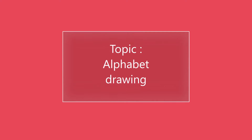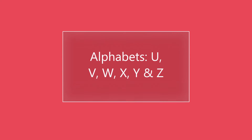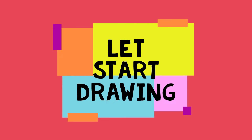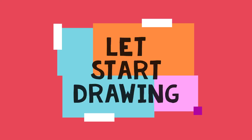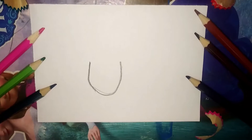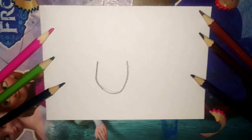So next we are going to do U, V, W, X and Y. Since we have only one more letter, that is Z, we are going to do all six letters. Let's start drawing.